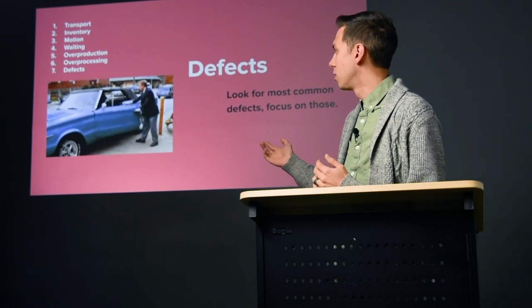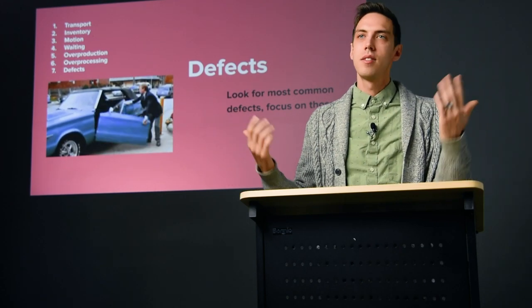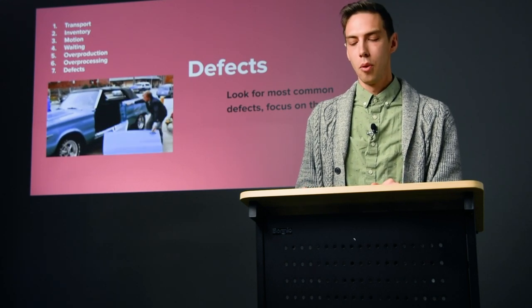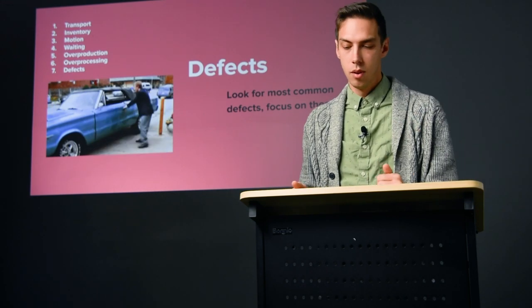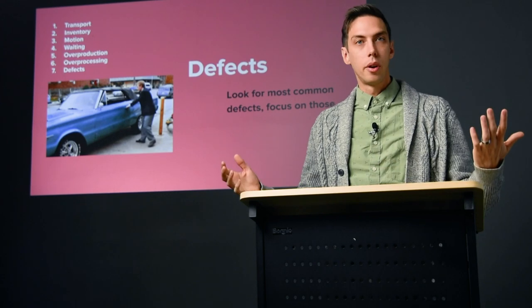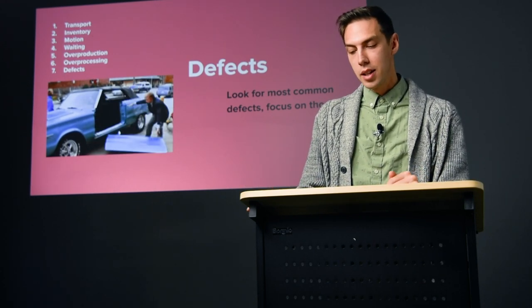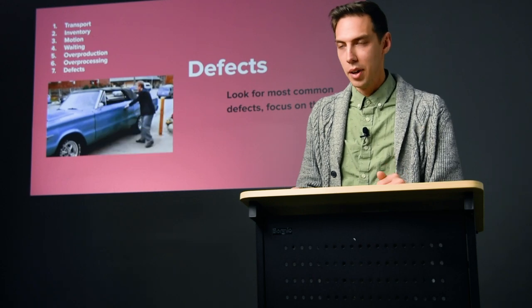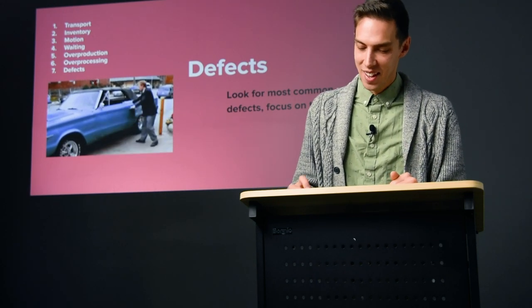Defects are an obvious waste — finding the most common, most important defects and figuring out where they come from. In our world, defects often come from a poor understanding of a user story: developers or designers start on a feature without really understanding it, leading to problems. Misalignment, lack of capabilities — for example, asking someone unqualified for a task will slow down the process and cause defects in the end result.